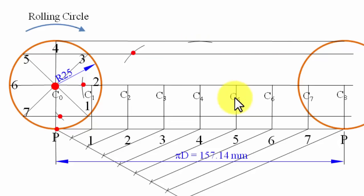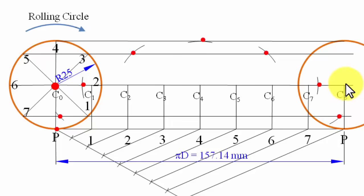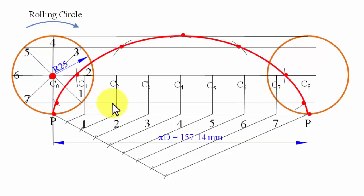With C5 as center and radius 25 mm, draw an arc intersecting the horizontal line through 5 — that gives P5. With C6 as center, arc through line 6 gives P6. With C7 as center, arc through line 7 gives P7. Finally, C8 as center just touches the baseline — that is P8 (= B). Join all these points P1 through P8 in sequence with a smooth curve — this is the cycloid.